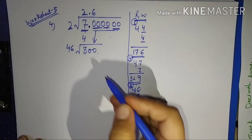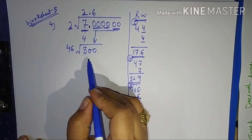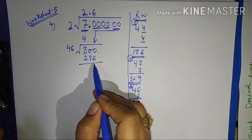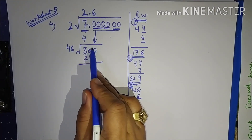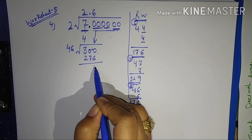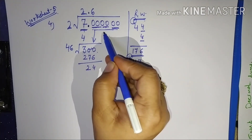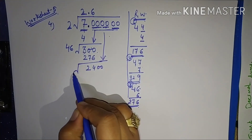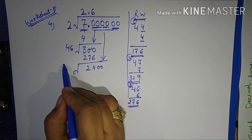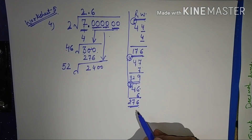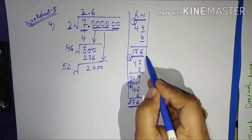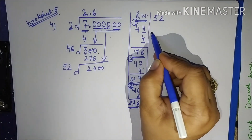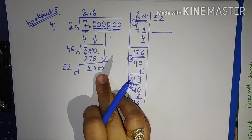So 46×6=276 — place 6 here. 300 minus 276: borrow gives 10 minus 6=4, and we get remainder 24. I'll take one more pair of zeros, making it 2400. And 46 plus 6 gives 52, so the next divisor starts with 52.